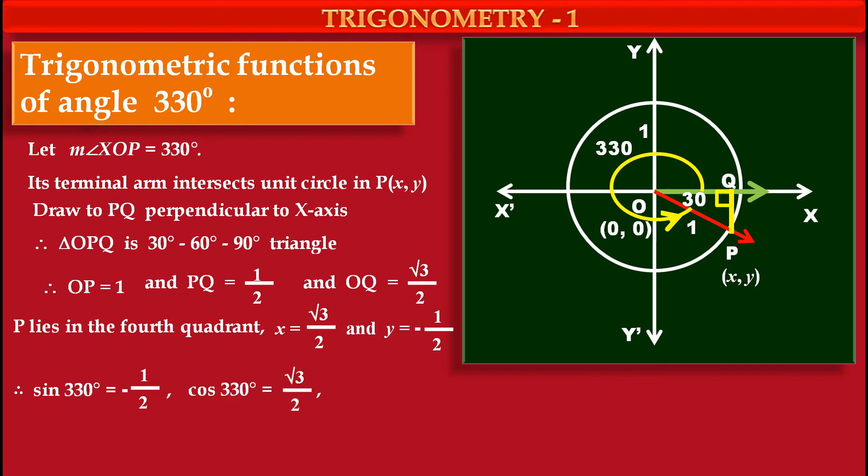Cos of angle 330 is equal to value of x, that is root 3 upon 2. And tan 330 is the ratio of sin and cos, so it is 1 upon root 3 but with negative sign, minus 1 upon root 3.